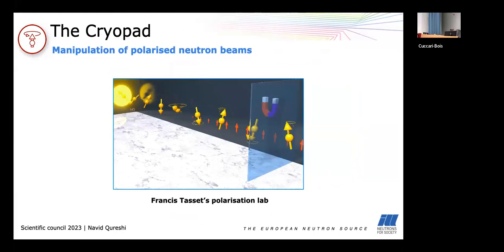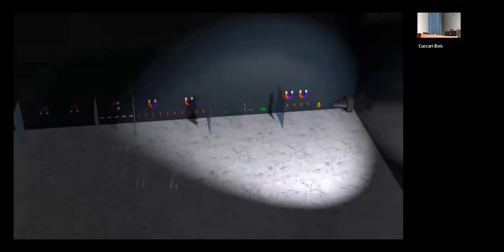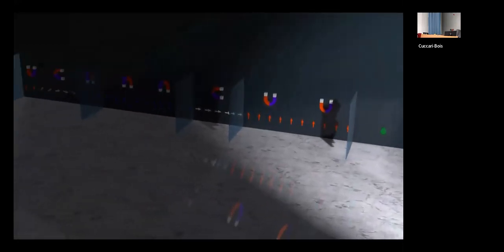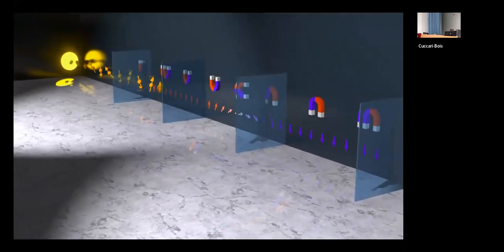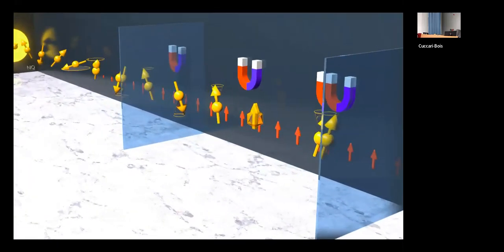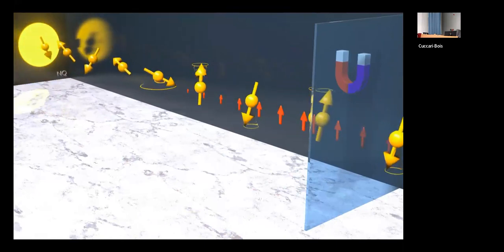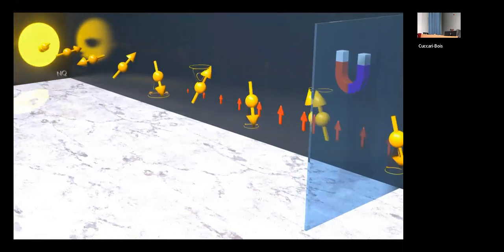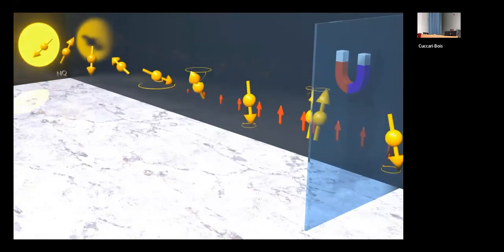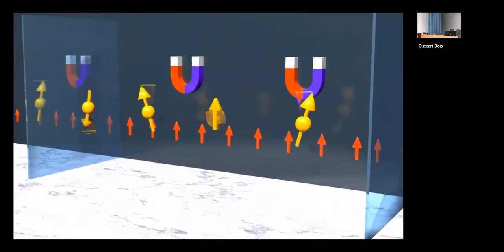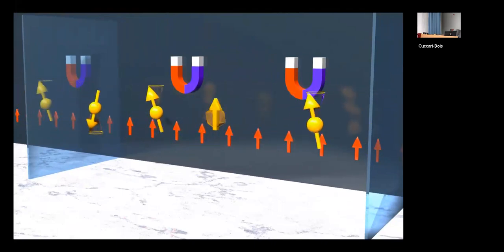So in order to build an apparatus like cryopad, Francis had to master the art of manipulation of polarized neutron beams from the creation of polarization, the analysis, keeping the polarization and manipulating it. So here I made a little animation which shows the different concepts which are necessary to build cryopad and I called it Francis Tasset's polarization lab because it's how I imagined he could have tested things. So it's a fictitious instrument which shows different sections separated by superconducting Meissner shields. We have our neutrons coming from the source and they have all the same wavelength.